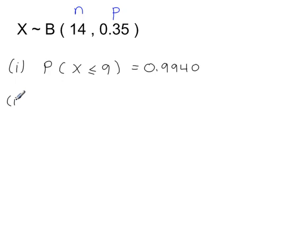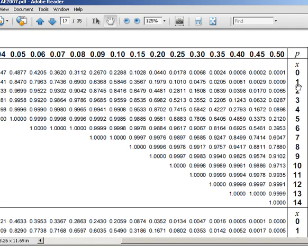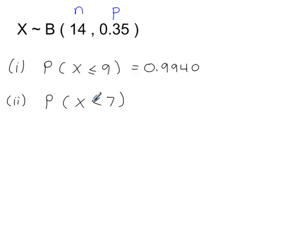Let's have a look at another one: the probability that X is less than 7. Now, these tables give you less than or equal to — they don't give you strictly less than. So let's rephrase the question: the probability that X is less than 7 is the same as the probability that X is less than or equal to 6.